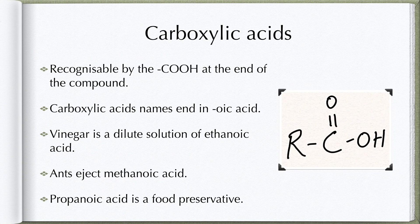Carboxylic acids can be identified by the COOH functional group at the end of the compound. All carboxylic acids have '-oic acid' at the end of their name. Vinegar, also known as ethanoic acid, is a well-known carboxylic acid. Methanoic acid is ejected from ants as a form of protection when they bite. Farmers often spray propanoic acid over harvested crops in sheds to preserve them.